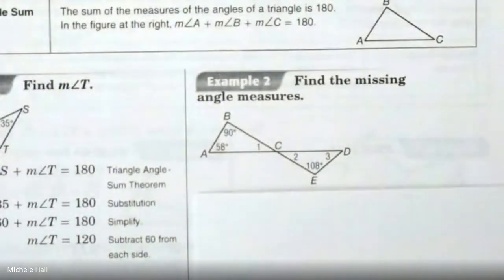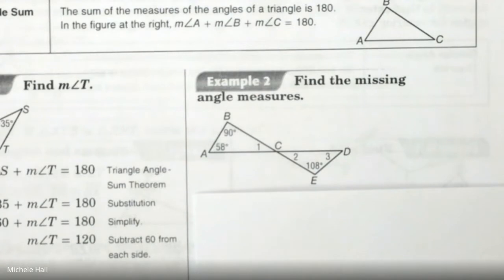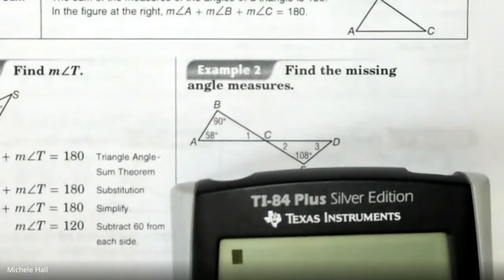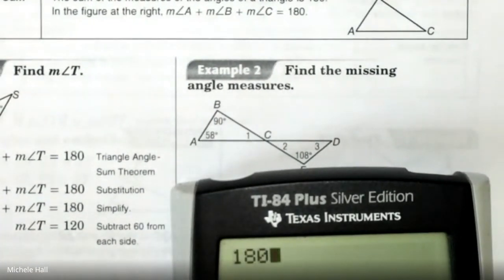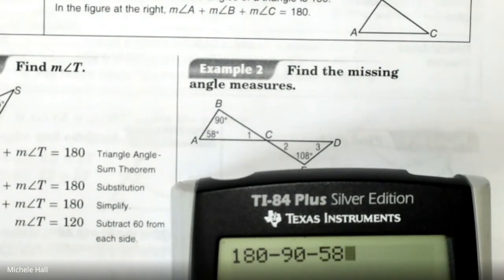Which one do you think is going to be easiest to find first? Look inside the separate triangles. Angle 1 is easiest. On your calculator, 180 minus 90, minus 58 — that will give the third angle: 180 degrees minus the first two angles. We see that's going to be 32.